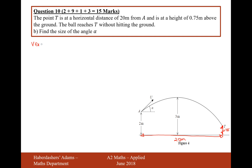For vertical SUVAT: our displacement S is going to be minus 1.25. The initial vertical speed U is U sine alpha. We're not particularly interested in V, the speed at that point. Acceleration A is minus G. For both the vertical and the horizontal SUVAT, the time that it reaches T is going to be equal — so T equals T — and it's important we use that.